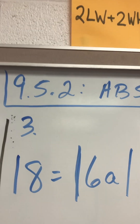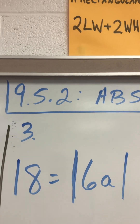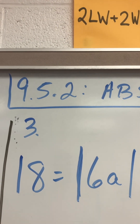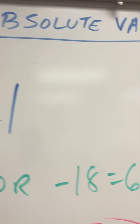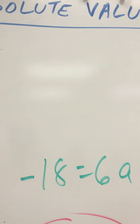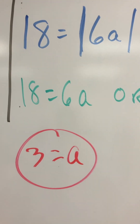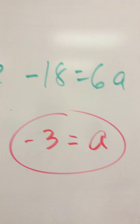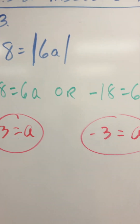18 equals absolute value of 6a. So 6a equals positive 18 or 6a equals negative 18. Divide by 6, you get positive 3. Divide by 6, you get negative 3. Two answers.